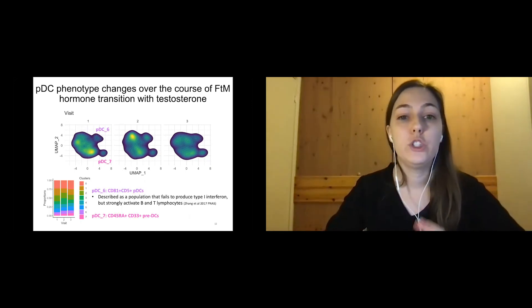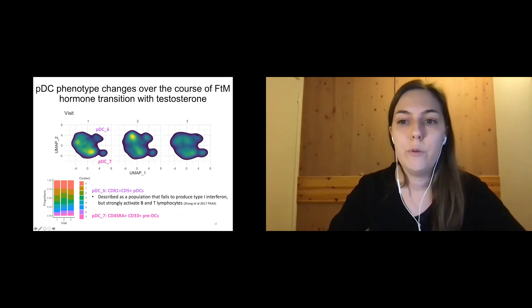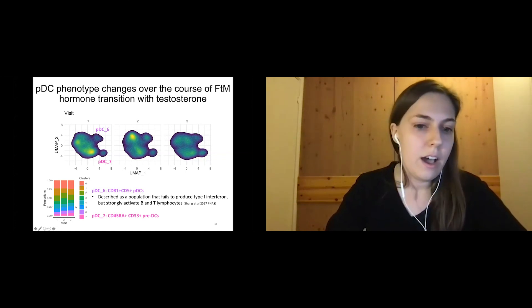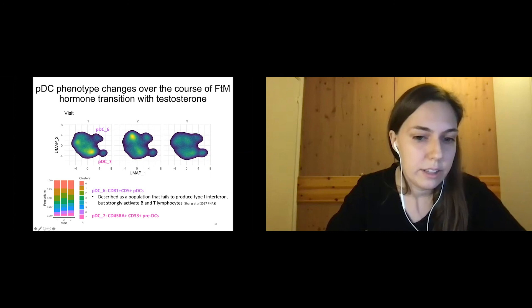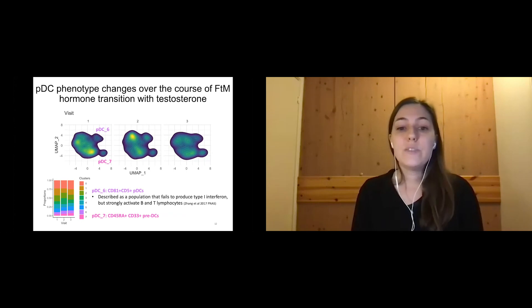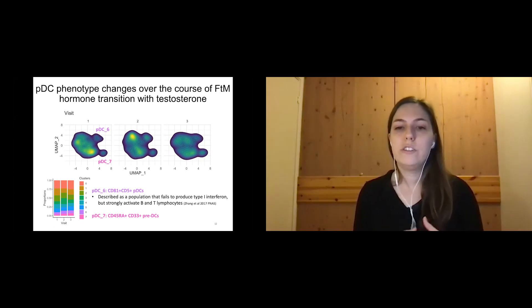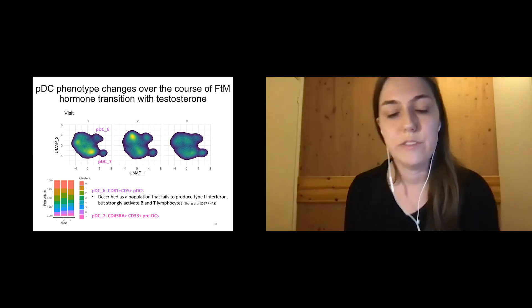Further, we also identified that there are two sub-cell populations of pDCs, which here I'm calling pDC6 and pDC7, that are going up with testosterone treatment. One of these populations is a pDC population that expresses CD81 and CD5 and has been previously described to fail to produce type 1 interferon, whereas it could actually better activate B and T lymphocytes. Another subpopulation that we're seeing increase here are the CD45RA positive, CD33 positive, pre-DCs. What we're really seeing here is that pDC levels are going down, but also their phenotypic changes are changing over the course of testosterone treatment.